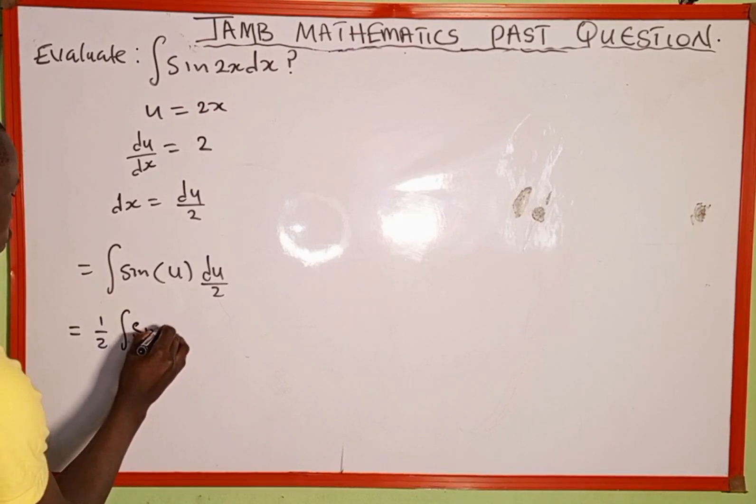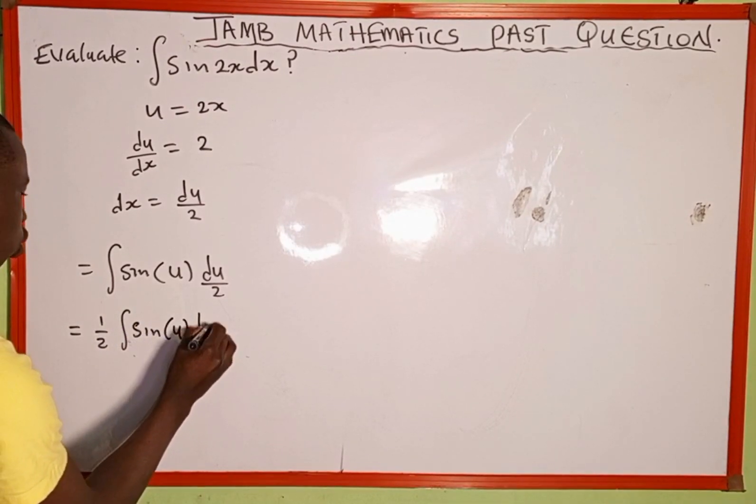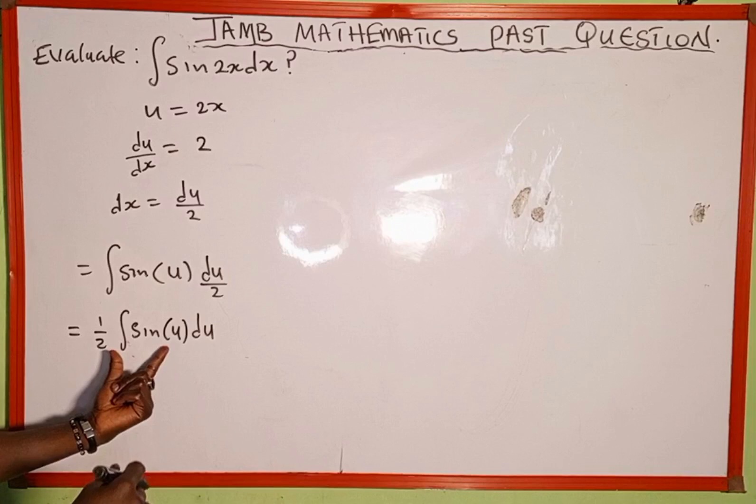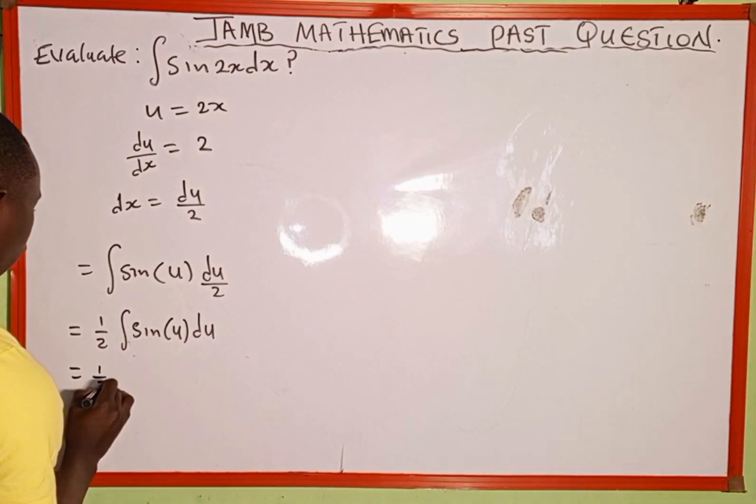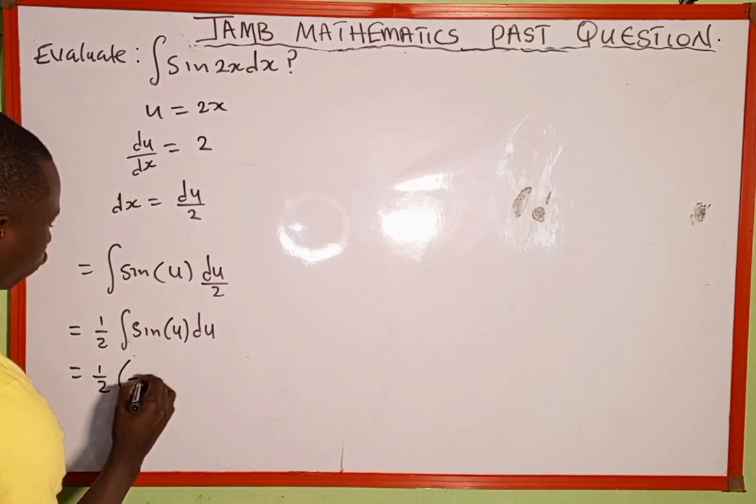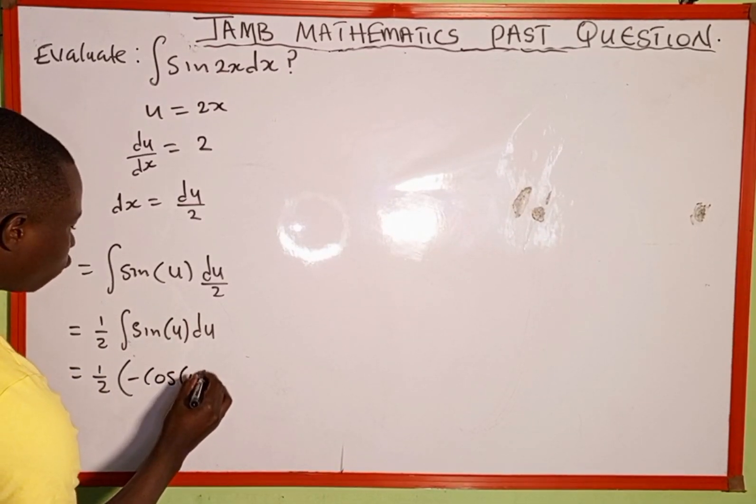Now we're going to integrate sine u with respect to u. This is going to be 1 over 2. The integration of sine u is going to give us negative cosine u.